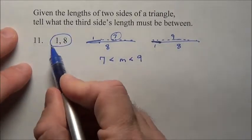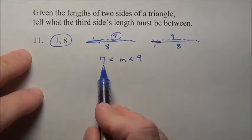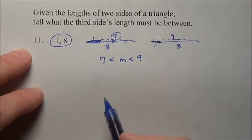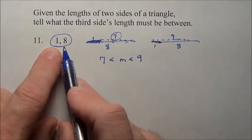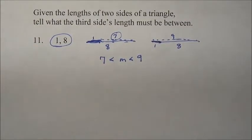Again, the quick way to get this answer is you simply subtract them to get the smallest it could be, because they're almost on top of one another, 8 and 1, and going back to the 7 there, and you add them to get the 9. So you subtract them to get the smallest, you add them to get the largest, and the measurement's got to be somewhere between these two measurements.